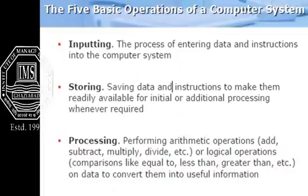There are five basic operations of a computer system. First is inputting, which means to input data to the computer system. Second is storing, which means saving the data and instructions to make them readily available for initial or additional processing whenever required. Data coming through the input devices is captured into the computer system, and after storing, the computer performs its main role: processing.